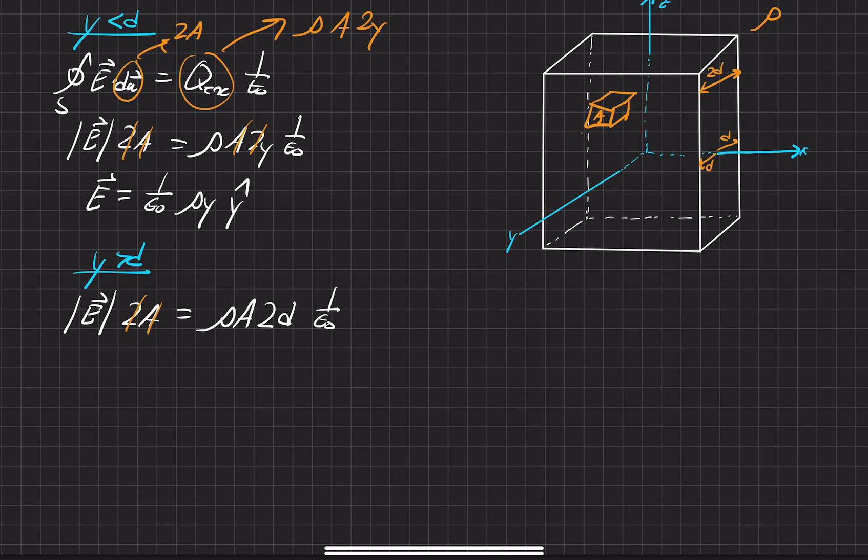We'll go ahead and cancel out some like terms. Solve for the electric field. Of course, we know it's in the y-hat direction, just like before. And then we'll go ahead and write the rest of this, which is just going to be rho times d.